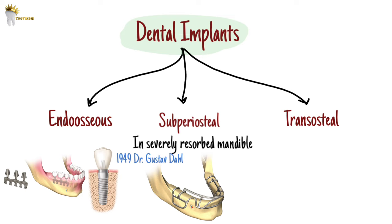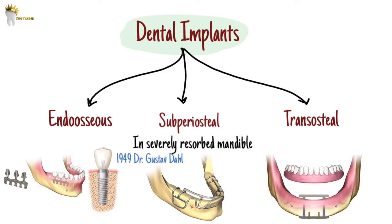Transosteal implants are also inserted in severely resorbed mandibles, where placing an endosseous implant may lead to mandible fracture. They are mostly used to stabilize loose dentures. These implants are rarely used, as their insertion requires major surgery under general anesthesia.